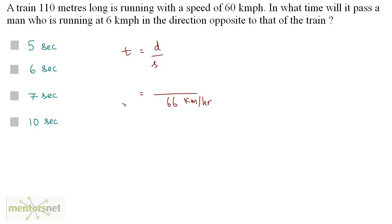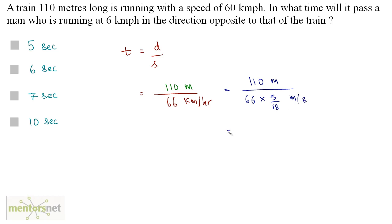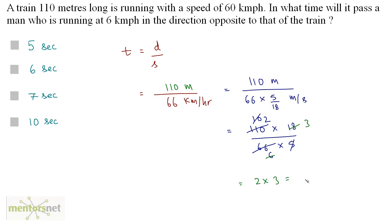To pass a man — who is essentially a point — the train will have to travel its own length, so the distance is 110 meters. We convert the speed from km/h to m/s: 66 times 5 by 18 meters per second. So time equals 110 divided by (66 × 5/18), which gives 110 × 18 divided by (66 × 5). Simplifying: 6 seconds. Option B is the correct answer.